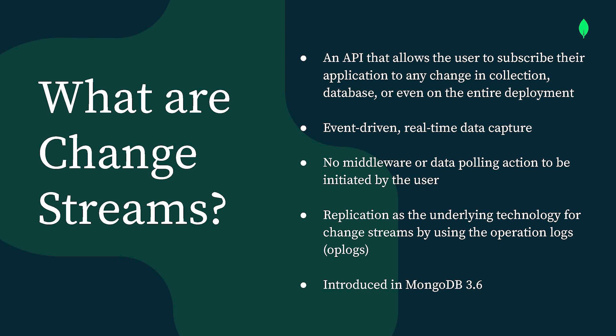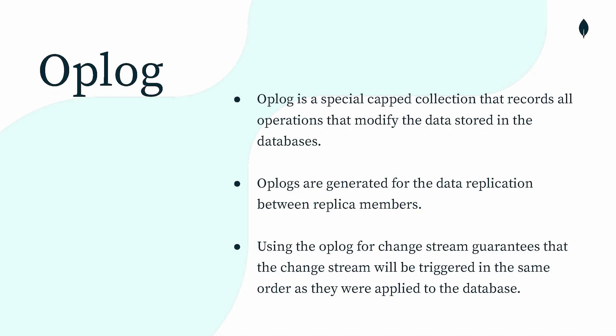The advantage here is there is no middleware or data pulling action to be initiated by the user. The underlying technology used in Change Stream is the same as used by MongoDB replication, that is operation logs. Change Stream uses the operation logs or op-logs to do its operations of copying or transmitting data from the source to the target systems. Oplog is the underlying mechanism doing all the internals for Change Stream.